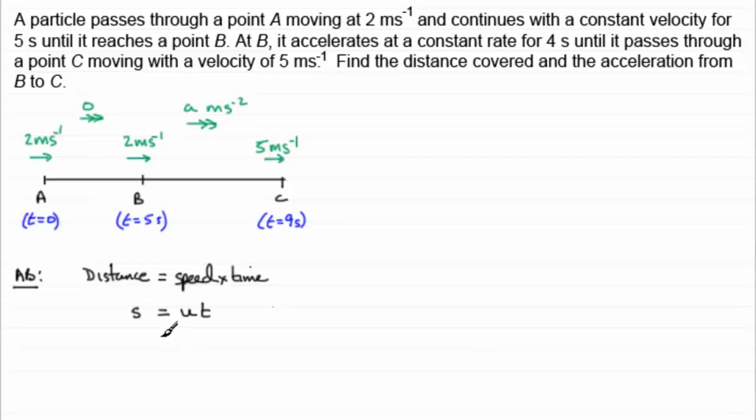So if we put in our values, U, the initial speed, is 2 times the time, which is 5 seconds, then it's going to have moved 10 metres. 10 metres from A to B.